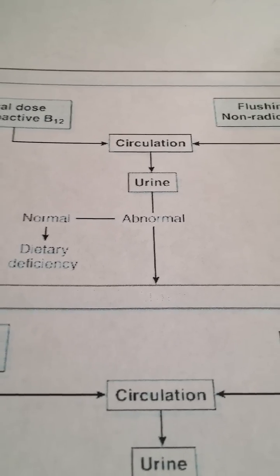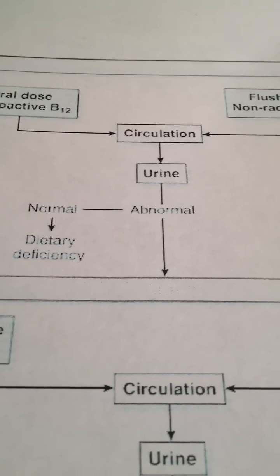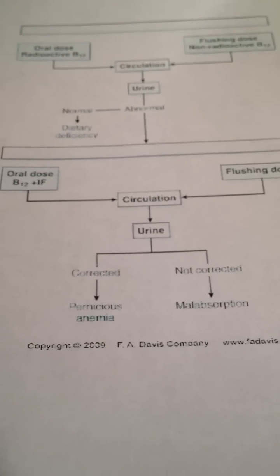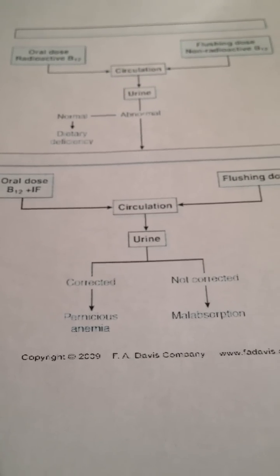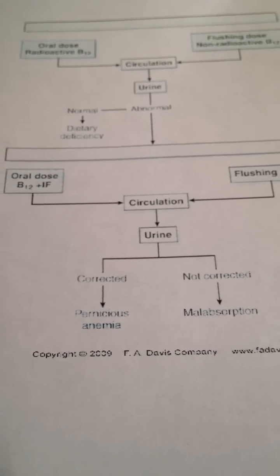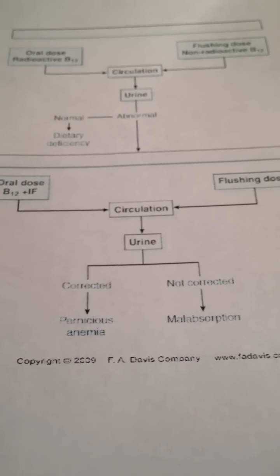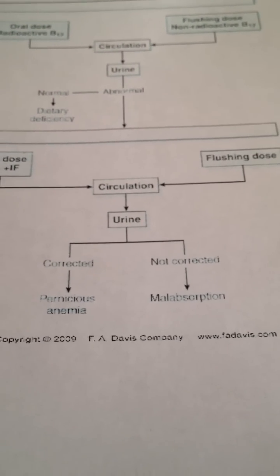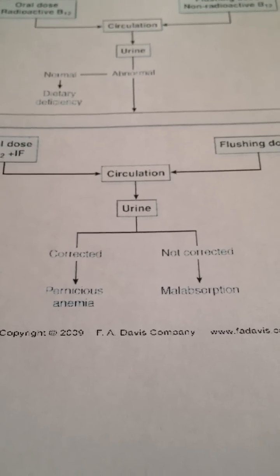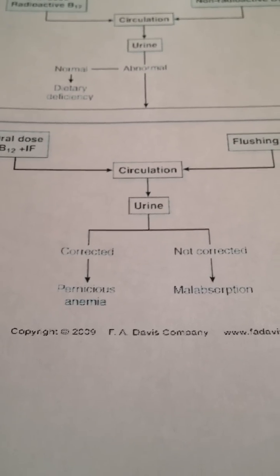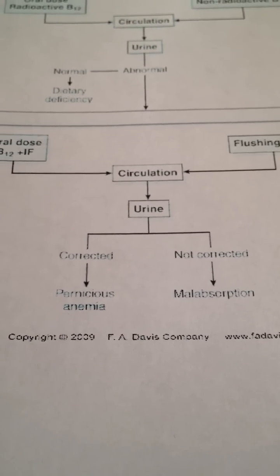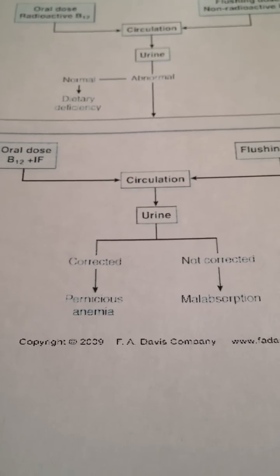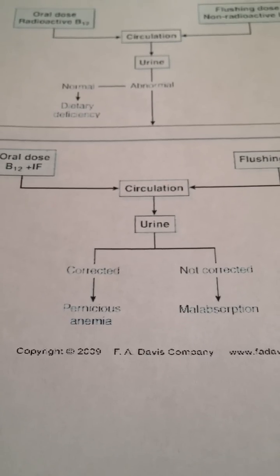If that result is abnormal, we go to what's called Part 2. In Part 2, we actually do the same thing as we did in Part 1, but we add intrinsic factor. We wait 24 hours and we test the urine. If it's been corrected, we know we have pernicious anemia, because pernicious anemia is caused from the lack of intrinsic factor.